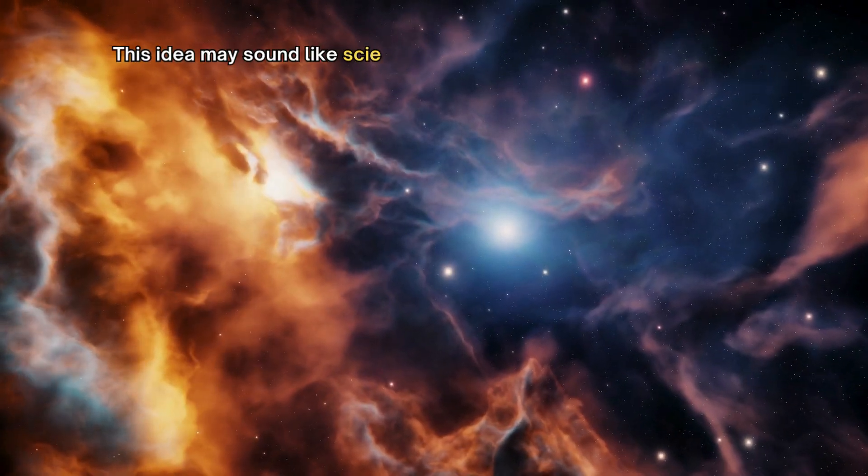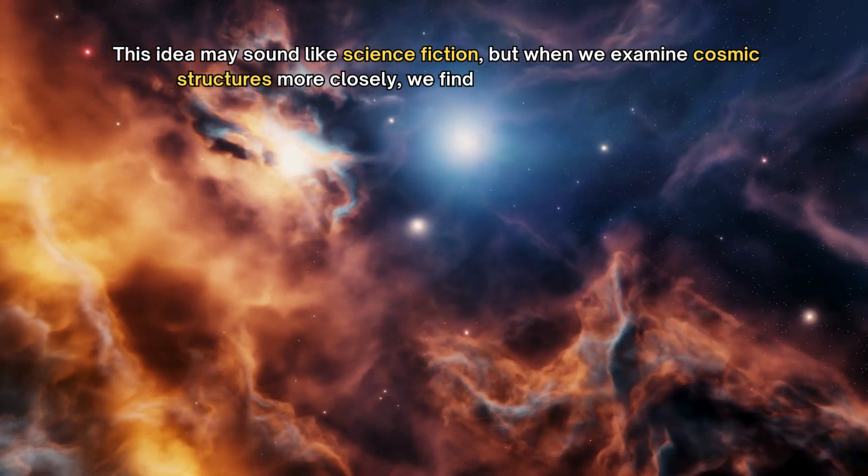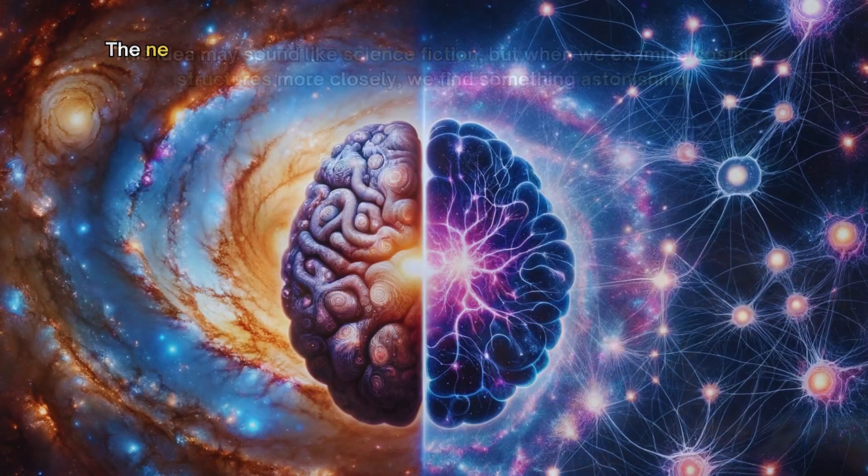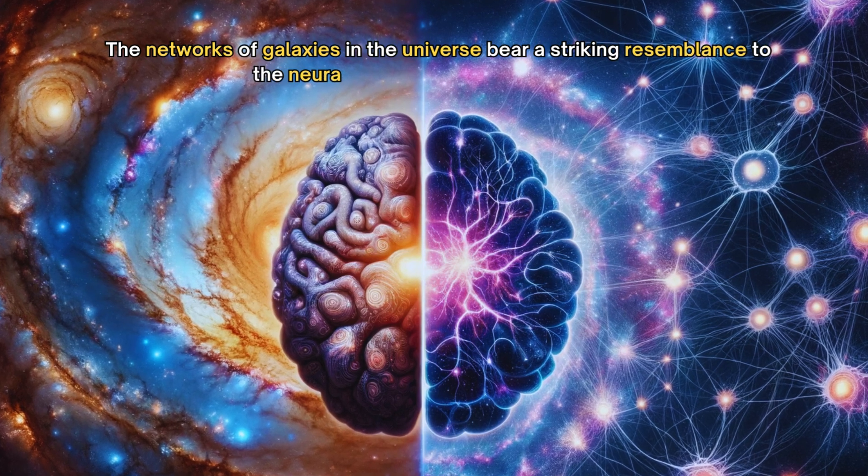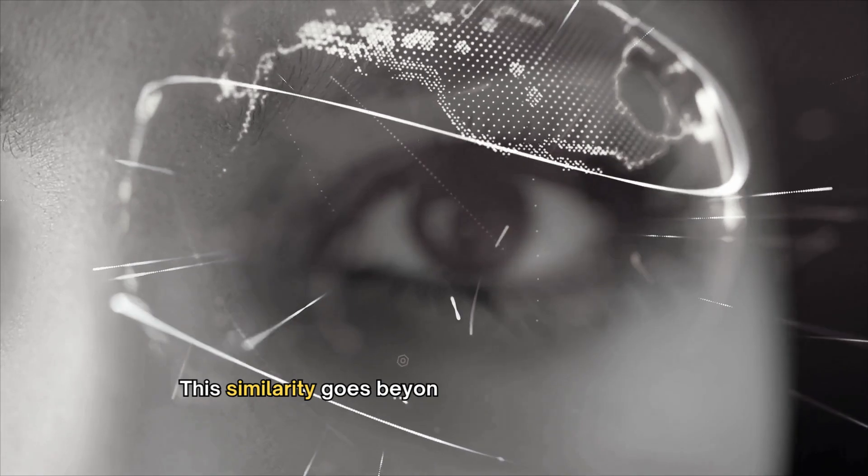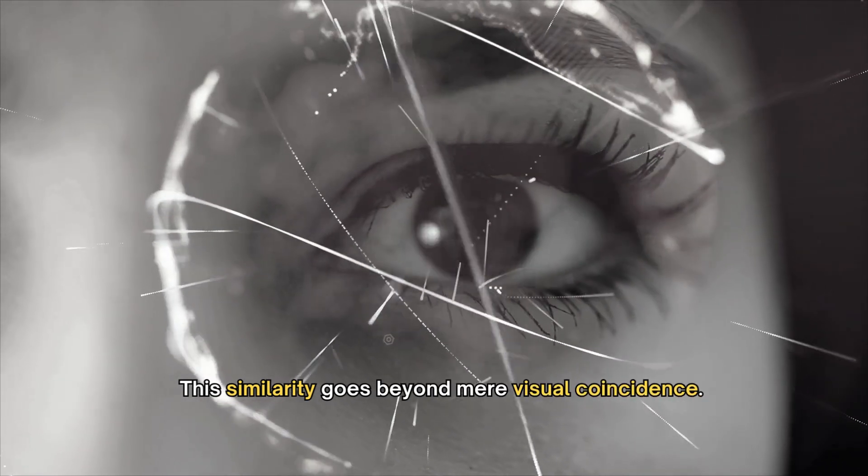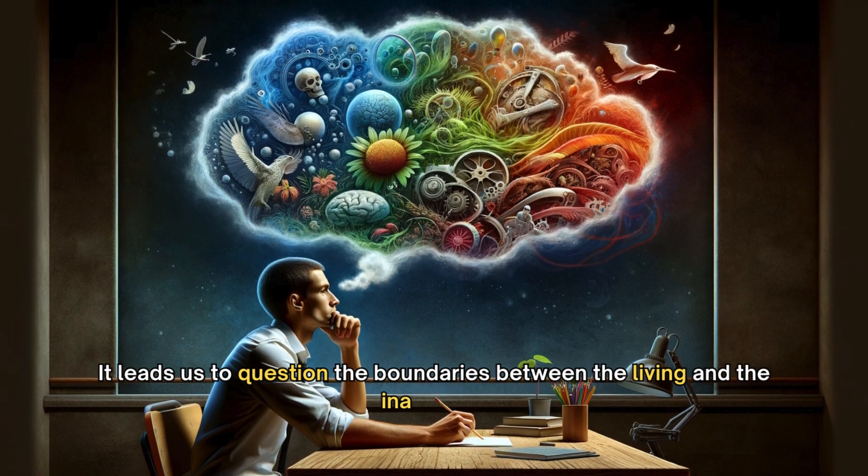This idea may sound like science fiction, but when we examine cosmic structures more closely, we find something astonishing. The networks of galaxies in the universe bear a striking resemblance to the neural networks in the human brain. This similarity goes beyond mere visual coincidence. It leads us to question the boundaries between the living and the inanimate.